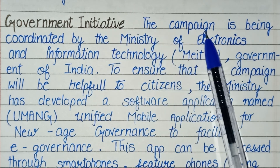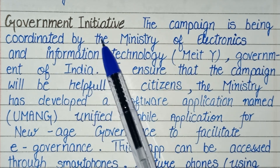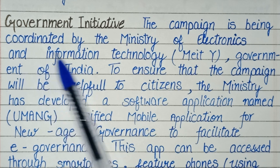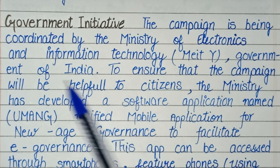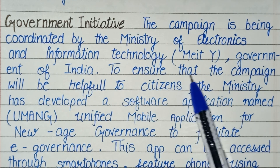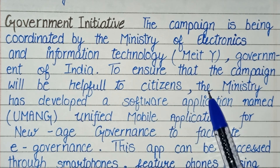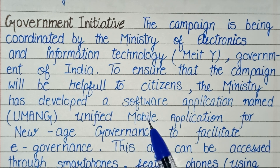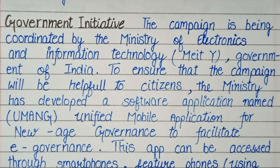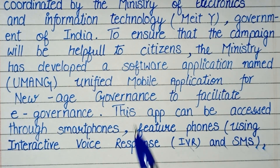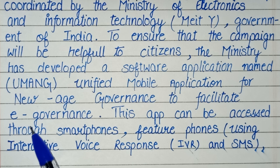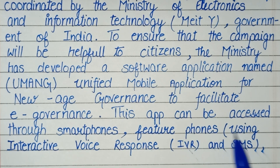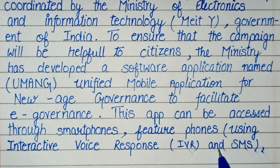The campaign is being coordinated by the Ministry of Electronics and Information Technology, Government of India, to ensure that the campaign will be helpful to citizens. The Ministry has developed a software application named Unified Mobile Application for New Age Governance to facilitate e-governance. This app can be accessed through smartphones, feature phones using interactive voice response (IVR), and SMS.